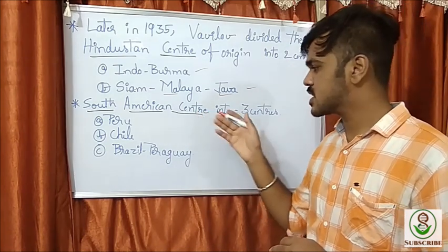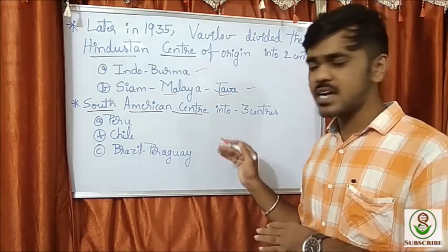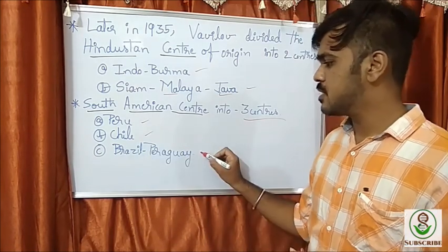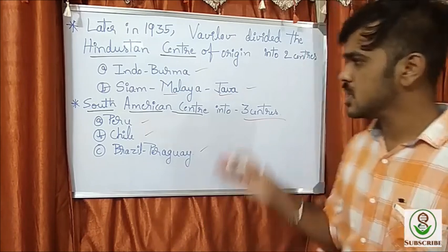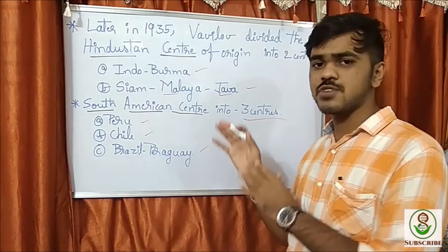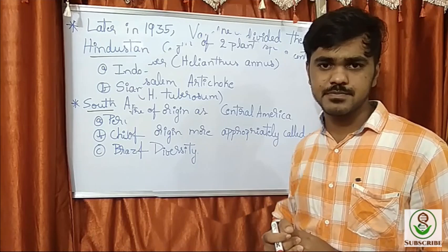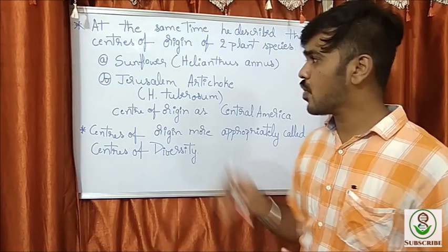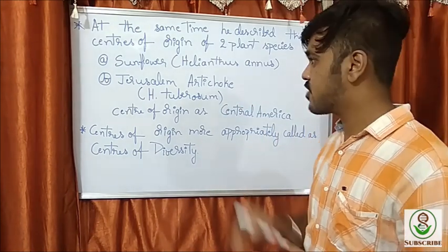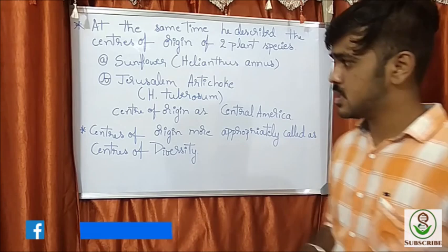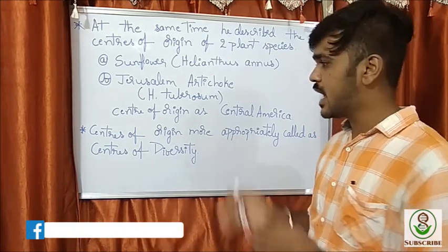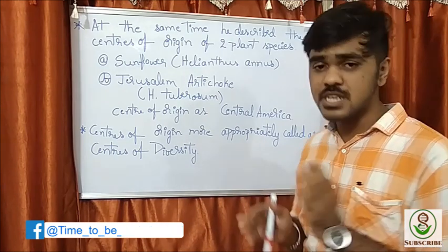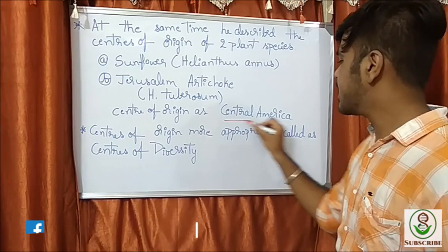Vavilov also divided the South American center of origin into three centers: the Peru center, the Chile center, and the Brazil-Paraguay center. Additionally, he described the center of origin for two plant species — sunflower (Helianthus annuus) and Jerusalem artichoke (Helianthus tuberosus) — identifying Central America as their center of origin.